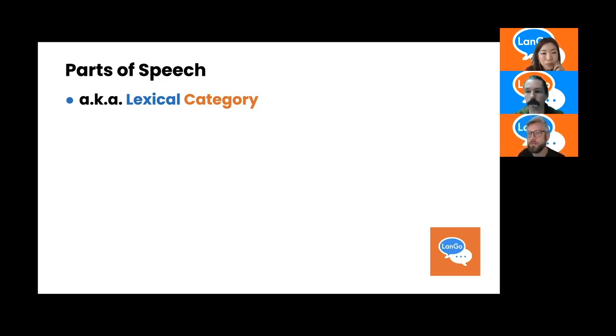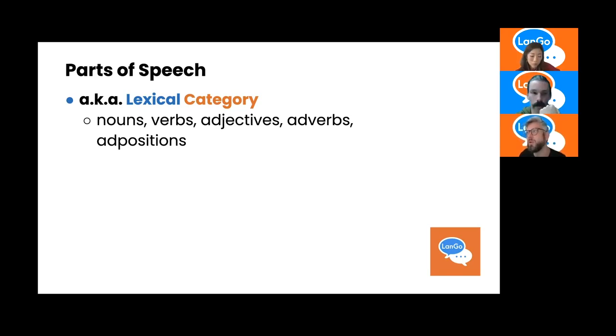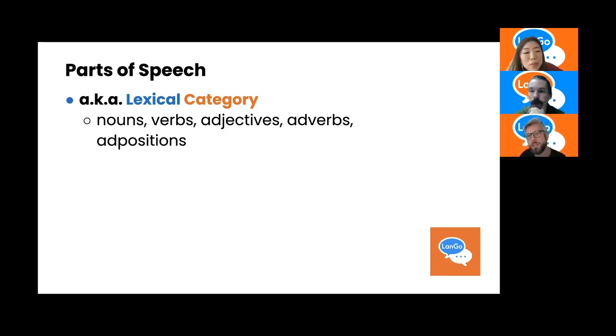A more technical term for part of speech is lexical category. The lexicon refers to the stock of words that we have as speakers. A lexical category is the bucket a word is put in. Some common lexical categories include nouns, verbs, adjectives, adverbs, and adpositions — remember, adposition is preposition or postposition. Be aware that languages have different sets; the ones we have for English are not applicable to all languages.